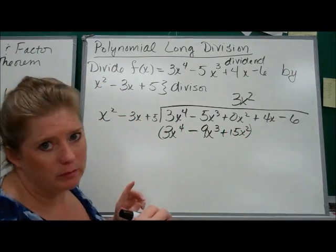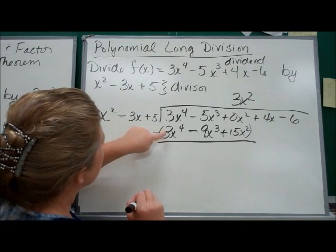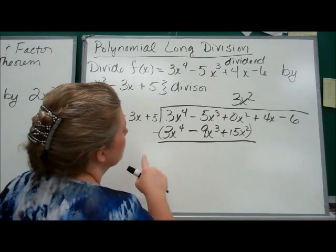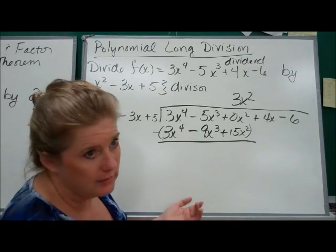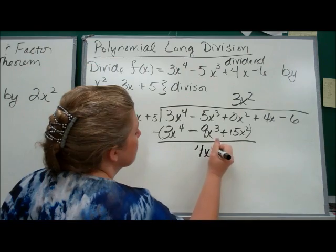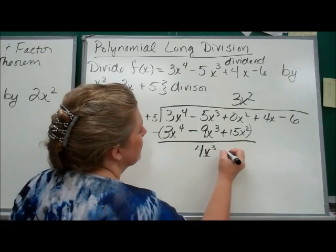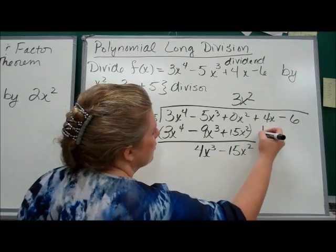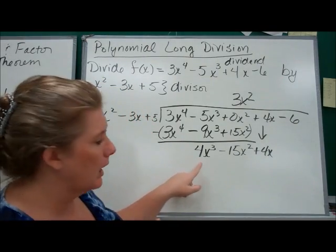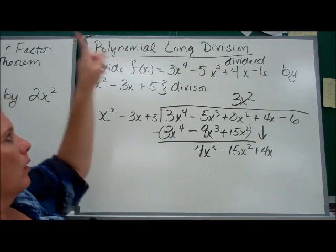Now you're going to do polynomial subtraction — we're going to subtract. 3x to the fourth minus 3x to the fourth cancels. Next: negative 5x cubed minus negative — minus and negative becomes plus — so negative 5 plus 9 is 4x cubed. And then 0 minus 15 is negative 15x squared. Then you're going to bring down the next term: plus 4x. Now ask yourself the same question again: what do I have to multiply x squared by to make it 4x cubed?